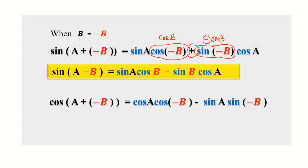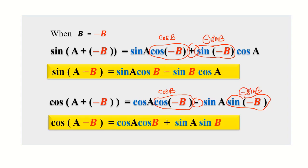Similarly, for cosine of A plus (minus B), we have cosine A cosine(minus B) minus sine A sine(minus B). Taking note that cosine(minus B) equals cosine B and sine(minus B) equals minus sine B, and being careful with the minus signs, we get the addition formula: cosine of A minus B equals cosine A cosine B plus sine A sine B.